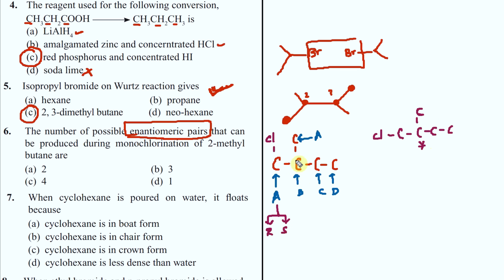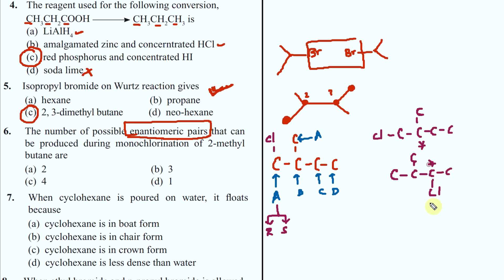If you put chlorine at position B - do you get R and S? No. At position B, when you add chlorine, there are two identical methyl groups, so it is the same molecule - no enantiomers. And if you put chlorine at C, you get a chiral center and this is chiral. So C will give you R and S. So I get two pairs of enantiomers.